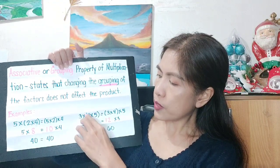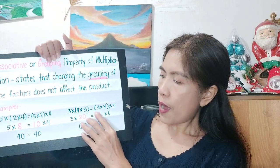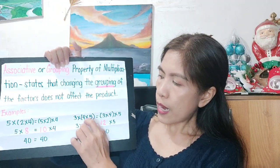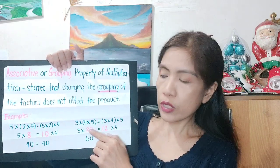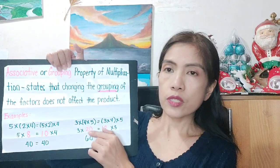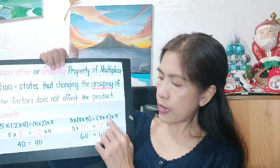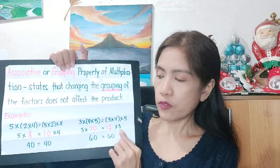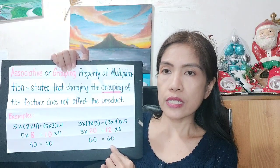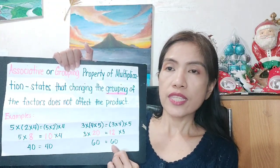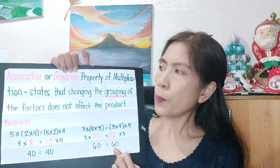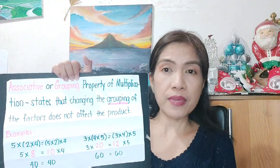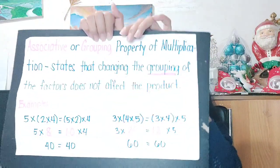Another example of the associative property: 3 times (4 times 5) equals (3 times 4) times 5. We first multiply 4 times 5 to get 20, then 3 times 20 is 60. On the other side, 3 times 4 is 12, and 12 times 5 is also 60. They have the same product. That's the associative or grouping property of multiplication — even if you change the grouping, the product remains the same.